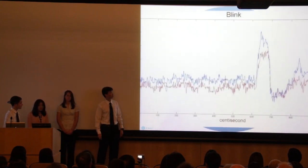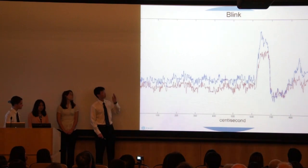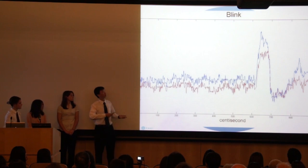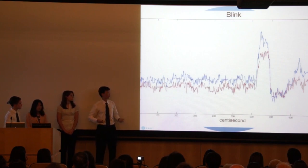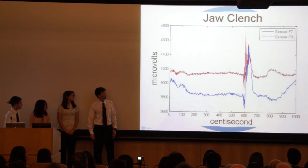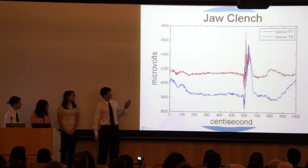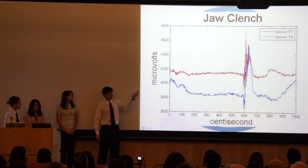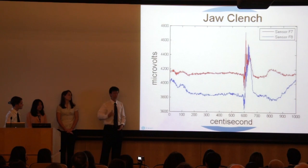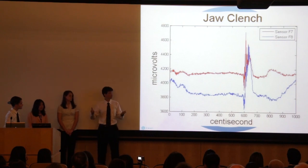Our next graph shows what occurs when our subject blinks. This may seem like a substantial jump, but it is in fact only 100 microvolts, which is very minimal relative to the entire EEG readings. However, our next graph shows what occurs during a jaw crunch. We can see a much more severe jump — more like 1,000 microvolts — which would have a great effect on our results.